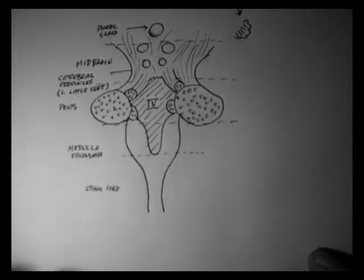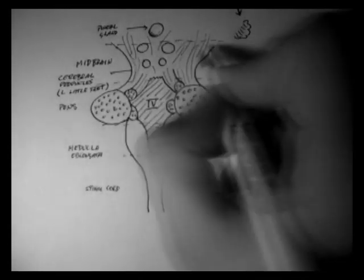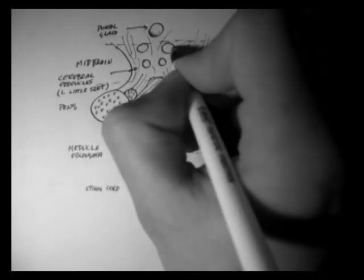Now over here we have the cerebral peduncles. Peduncle means little foot in Latin, and they're the little feet of the brain. They are huge white matter tracts up to the cerebrum, which is the brain.